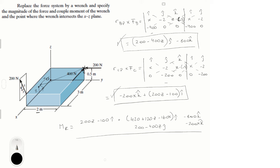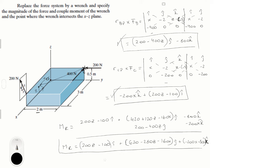M_r is equal to the sum of the three vectors. Adding all the i's, j's, and k's together: in the i we have (200z − 100), in the j we have (420 + 120z − 160x) plus (200 − 400z), and in the k we have minus 800 minus 200x. Simplifying: M_r = (200z − 100)i + (620 − 280z − 160x)j + (−200x − 800)k. This is the first formula we need for the moment of the wrench.